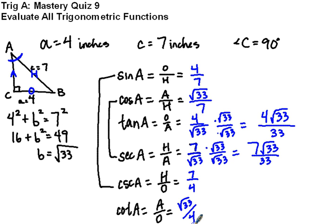These are the six answers I'm looking for. 4 sevenths, root 33 over 7, the tangent of A is 4 root 33 over 33, the secant of A is 7 root 33 over 33, the cosecant of A is 7 fourths, and the cotangent of angle A is root 33 over 4.